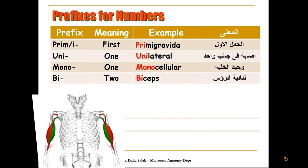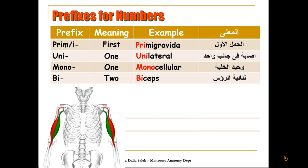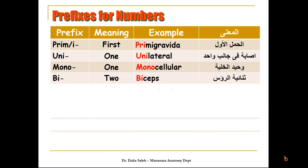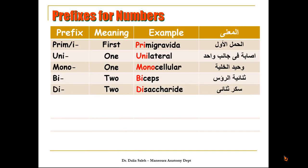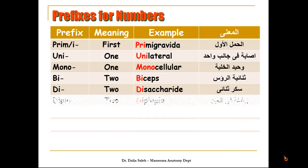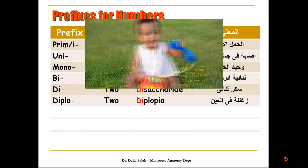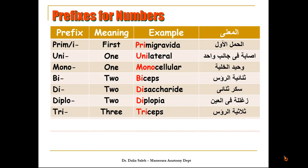'Bi' means two, as in 'biceps', that muscle with two heads. 'Di' also means two, like in 'disaccharide', a type of sugar. 'Diplo' means two, as in 'diplopia', or double vision. 'Tri' means three, as in 'triceps', also a muscle with three heads.